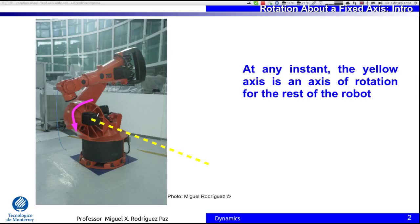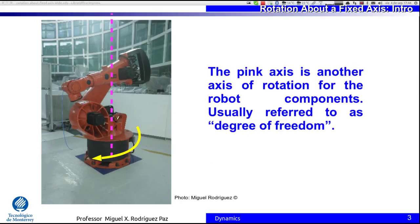We have another axis as well in this robot, indicated by this vertical pink line, and the motion is indicated by this arrow. Usually in robots these kinds of rotations are indicated as degrees of freedom. In our case we are going to analyze structures on the plane. In this course we are talking about planar dynamics and what is happening to a 3D object when we are trying to solve the planar motion.